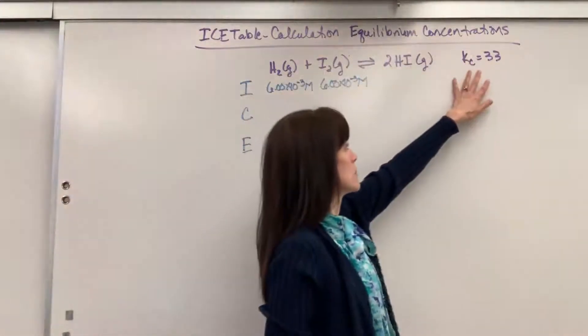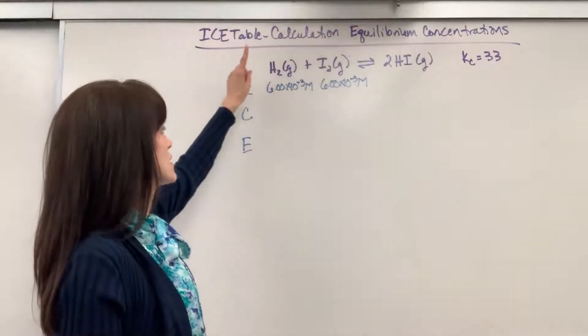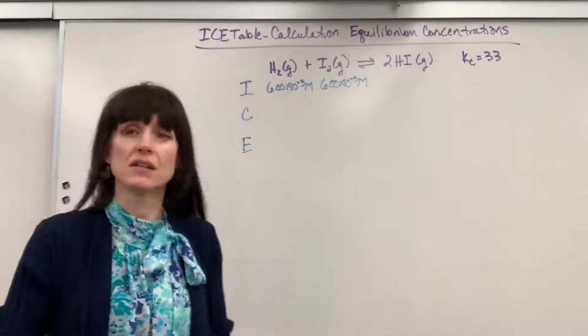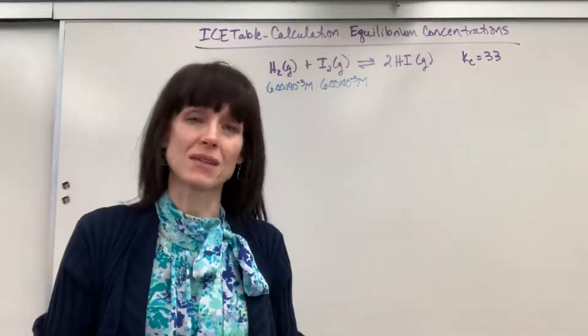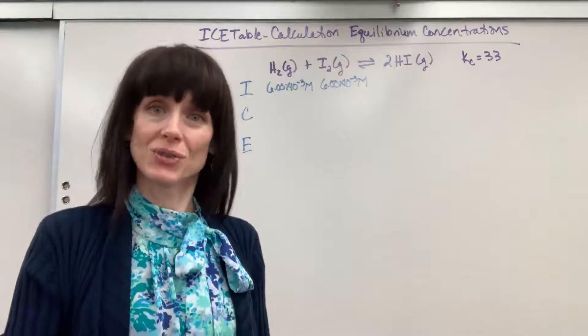we are given the equilibrium concentration is 33 and told that the initial concentrations of each of the reactants, hydrogen and iodine, are 1 times 10 to the minus 3 molar. And we're asked, what are the final equilibrium concentrations?